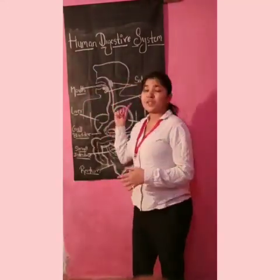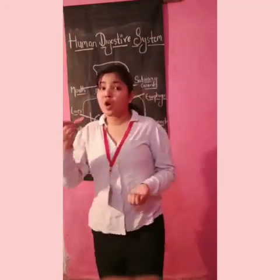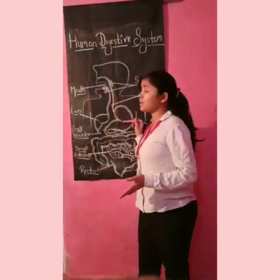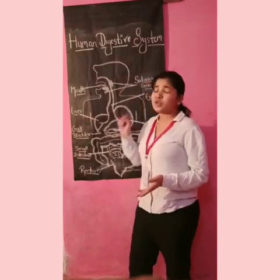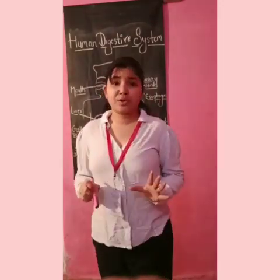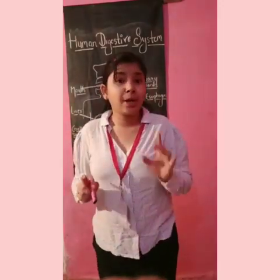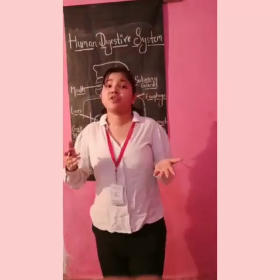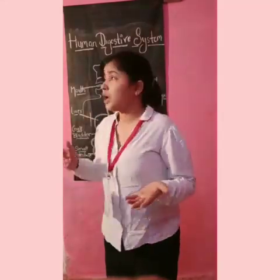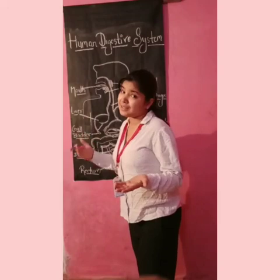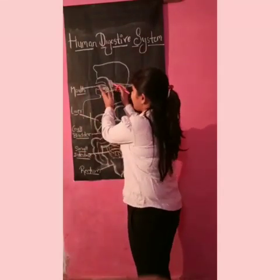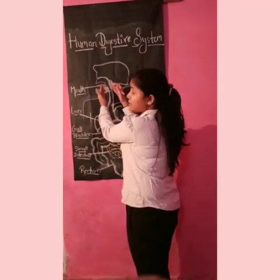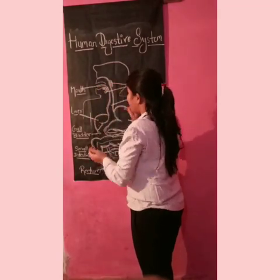Now let's move to the esophagus. The esophagus is a long tube-like structure which helps food reach the stomach. It uses a movement called peristalsis. Peristalsis is the relaxation and contraction of muscles according to the food's shape and size, allowing the body's muscles to move food toward the stomach.